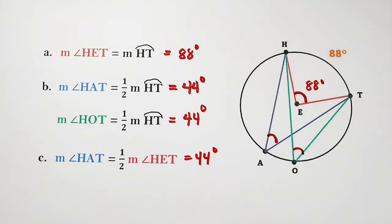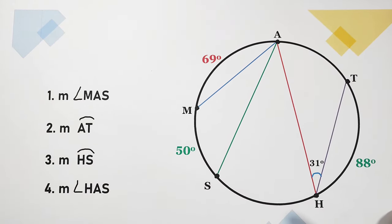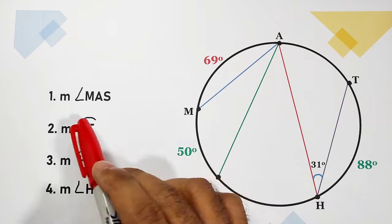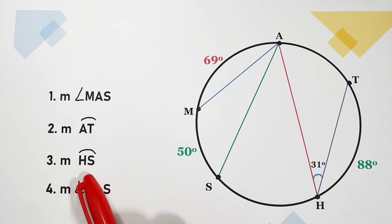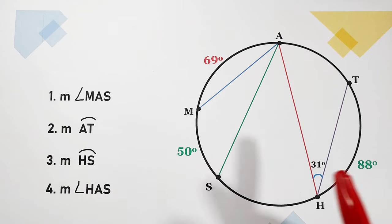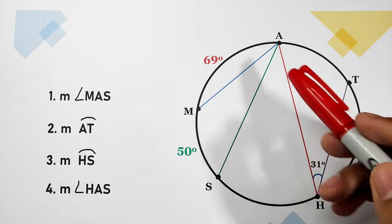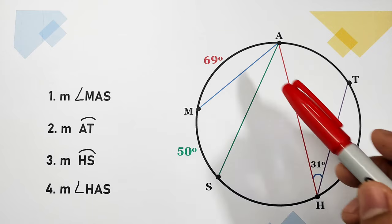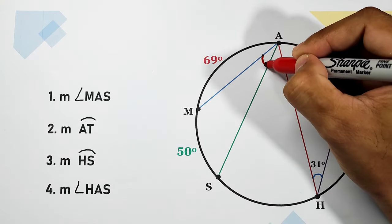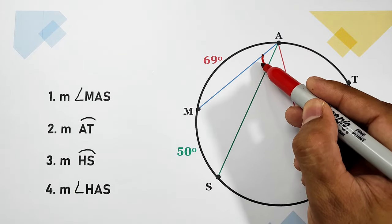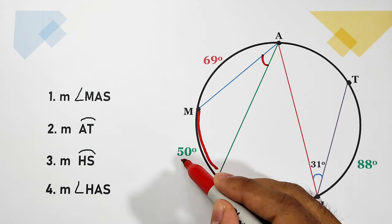Let us find the measure of angle MAS, number two the measure of arc AT, number three the measure of arc HS, and number four the measure of angle HAS. From the figure, we can identify the measure of angle MAS using the intercepted arc. The intercepted arc of angle MAS is arc MS, which is equal to 50 degrees.